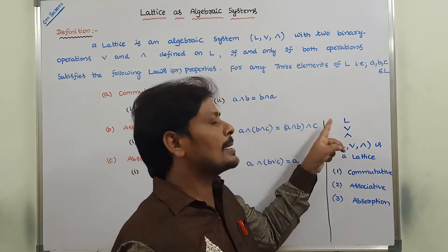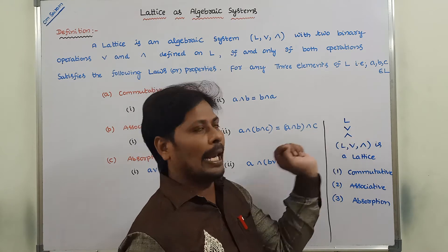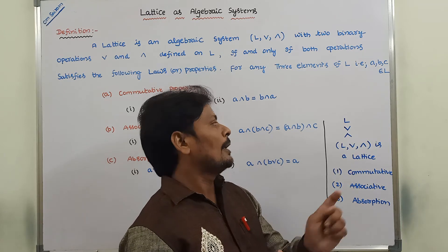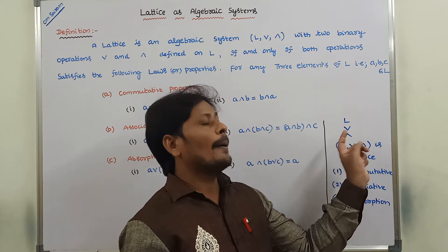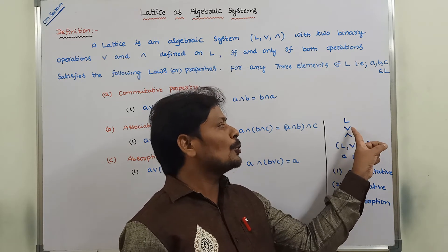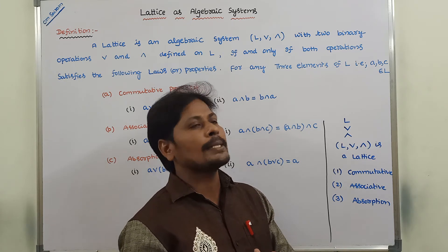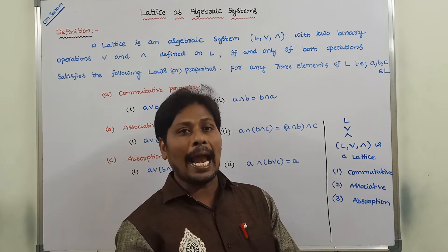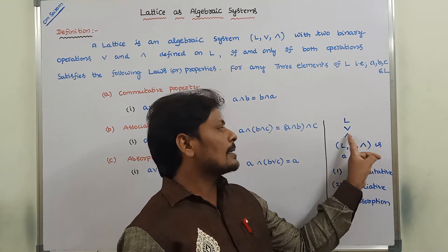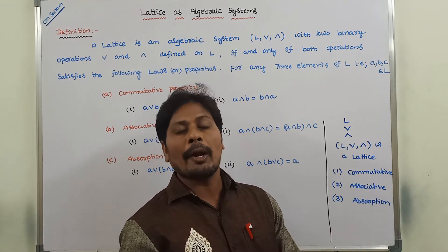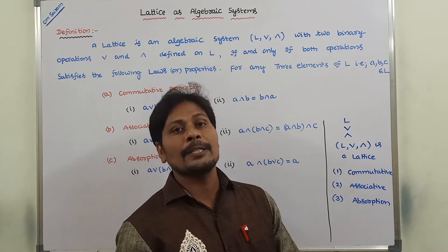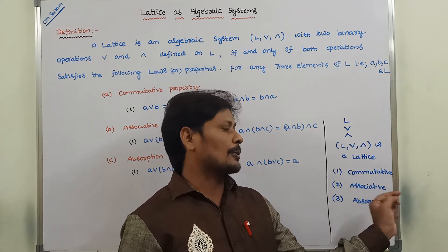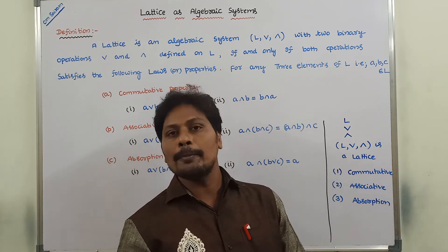Once again, let us consider a finite set, capital L. On that finite set, we are performing two binary operations. One is join operation, and the second one is meet operation. These two operations can be performed on the elements of the set L. Hence, we can say that L is said to be a lattice. Now, this lattice is said to be an algebraic system if and only if it satisfies three properties: first one is commutative property, second one is associative property, third one is absorption property.